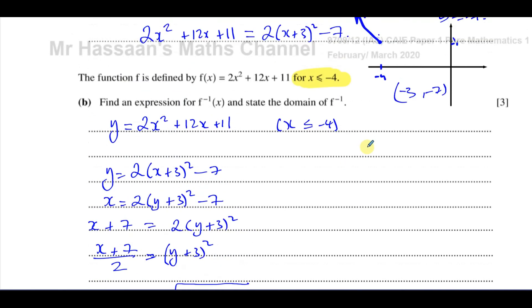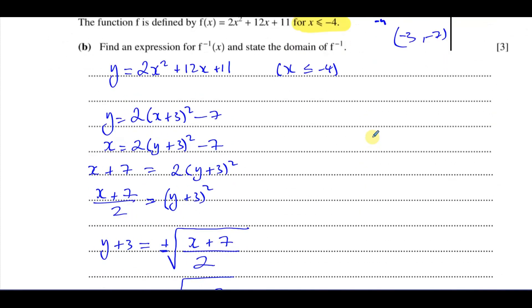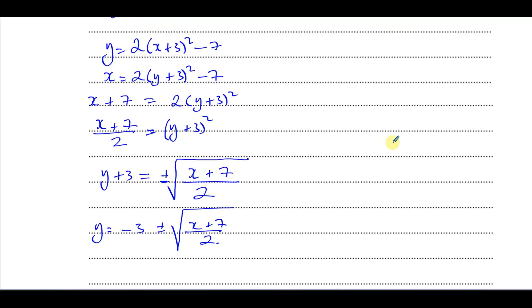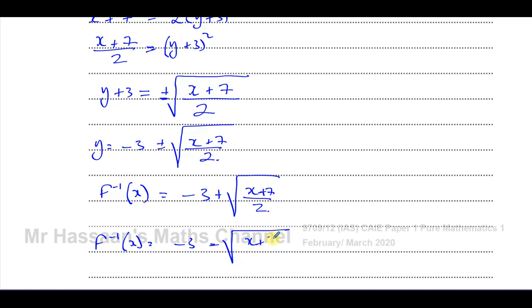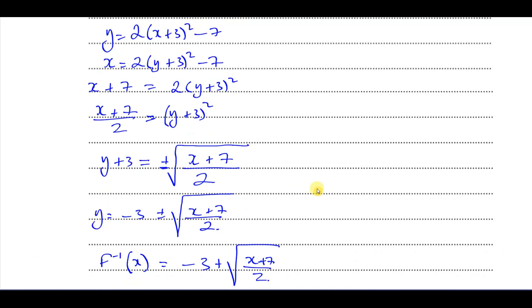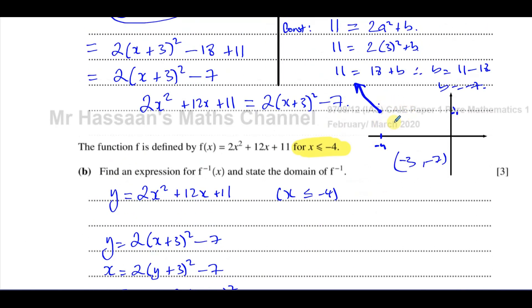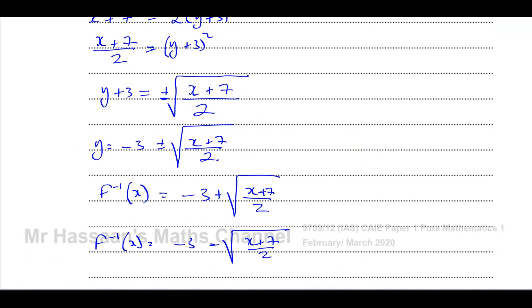So y equals minus 3 plus or minus the square root of (x plus 7) over 2. The inverse must be either minus 3 plus the square root or minus 3 minus the square root — not both. Since the domain is restricted to the left of the vertex, the correct choice is the negative square root.